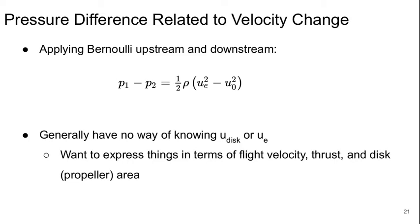And the pressure difference is then related to the velocity change by applying Bernoulli's equation on both the upstream and downstream sides. We can get that the change in static pressure p1 minus p2 equals one-half rho times u2 squared minus u0 squared.